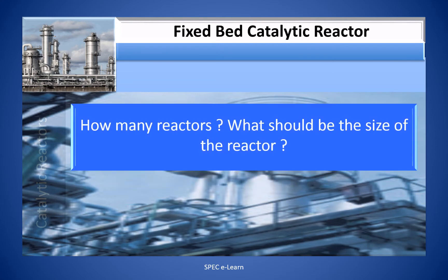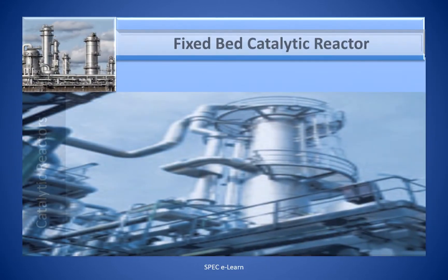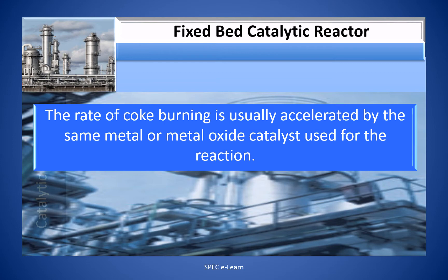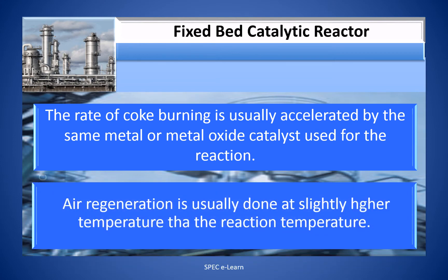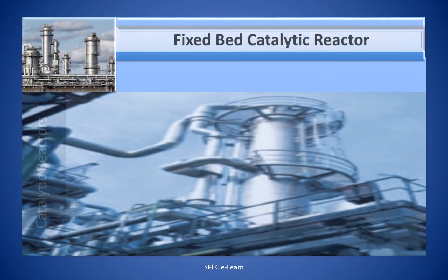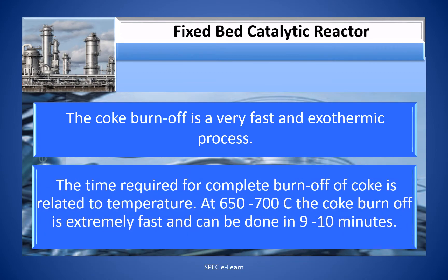The number and size of the reactors are determined by the plant capacity. During regeneration, the rate of coke burning is usually accelerated by the same metal or metal oxide catalyst used for the reaction. Air regeneration is usually done at a slightly higher temperature than the reaction temperature. The coke burn-off is a very fast and exothermic process. At 650 to 700 degrees centigrade, the coke burn-off is extremely fast and can be done in 9 to 10 minutes.